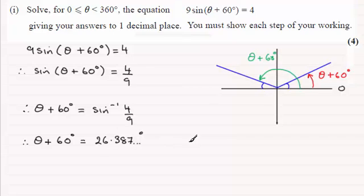That angle there will correspond to this blue angle in here. So let's just mark that in as being 26.387 and so on degrees. So that means that this one here will be 26.387. So when it comes to working out the green angle for theta plus 60 degrees, it'll be 180 minus the 26 odd degrees. And that gives you 153.612 and so on degrees.